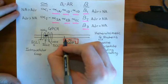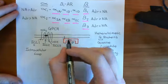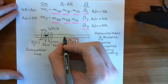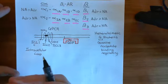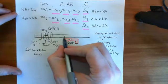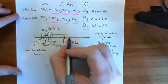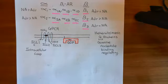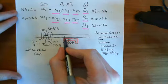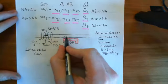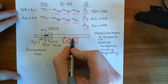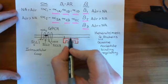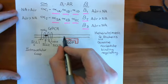Alpha subunits have a lipid moiety sticking off them — a long hydrophobic group stuck onto the side of the protein. This implants itself into the inner leaflet of the phospholipid bilayer, which anchors the alpha subunit to the bottom of the plasma membrane. That is how alpha subunits are attached to the inner leaflet.